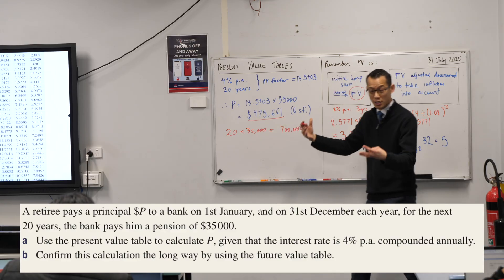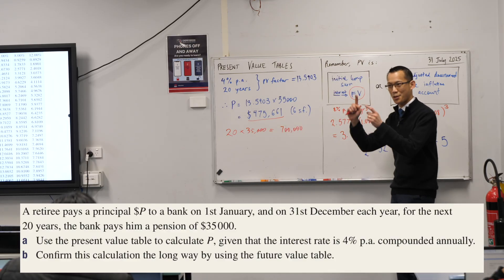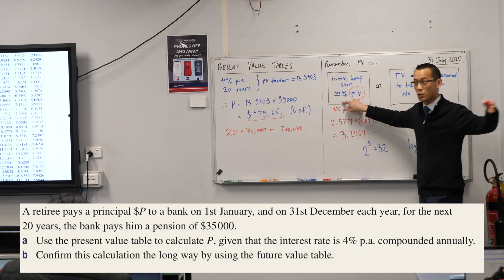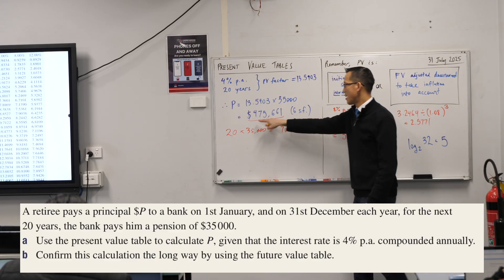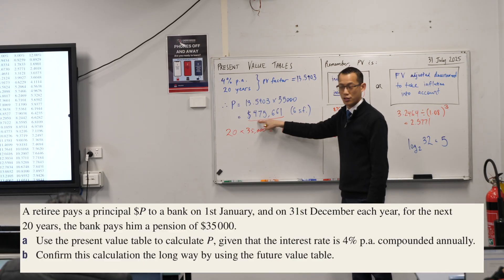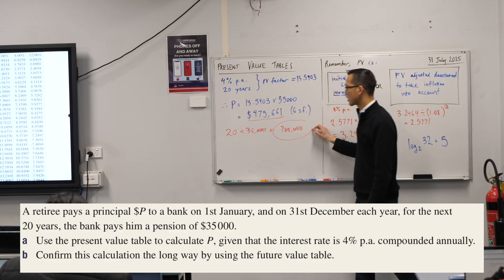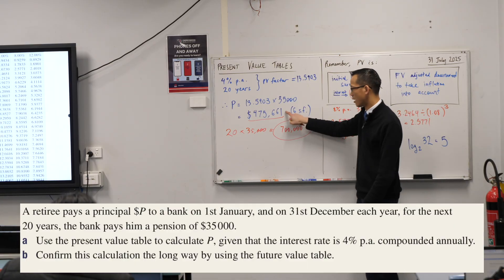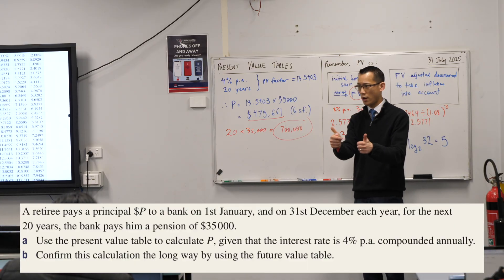Now, this is considerably less than seven hundred thousand, but the reason it can be is because interest keeps getting applied for that whole 20 years. So, therefore, in the end, even though this is how much the retiree put in, this is how much the bank will pay back. And your sense check sort of can work here. You're like, ah, it's less, but it's in the ballpark. Following so far?